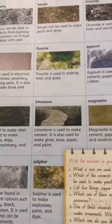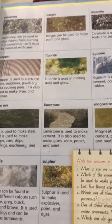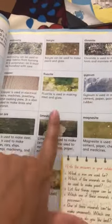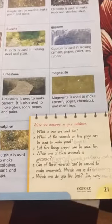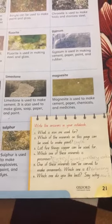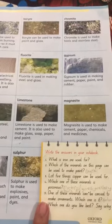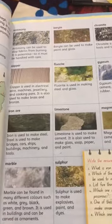On page number 21, you have information on minerals and their uses. This is your task: read all the uses of these minerals. After reading the uses, you will be able to answer the following question given on page number 21. I am solving one for you — what is iron ore used for? Here you have the uses of iron ore.